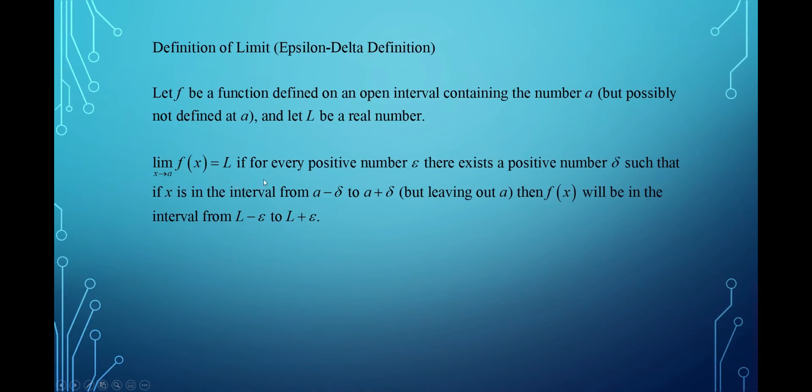the limit as x approaches a of f(x) will equal l, if you can always do this. For any positive number epsilon, you can find a number delta, such that if x is in this interval from a minus delta to a plus delta, but leaving out a,